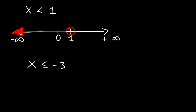To represent the answer using interval notation, the lowest value on the left is negative infinity and the highest on the right is 1. You should always use parentheses when dealing with infinity. Anytime you have an open circle, also use parentheses. If it's closed, then you can use brackets.